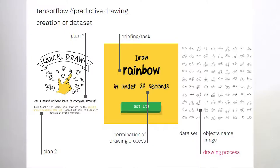For predictive drawing, there's a tool which is called TensorFlow by Google, and it works like this. The plan of the program is to recognize hand drawings and doodles. There's a briefing or a task, for example, draw a rainbow, and a termination of the drawing process, which means you have to do it in under 20 seconds. And the result is a big data set with classified object names of the doodles.